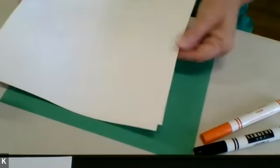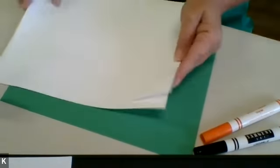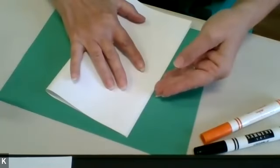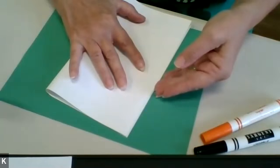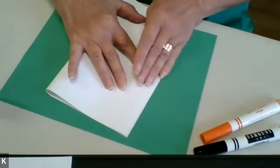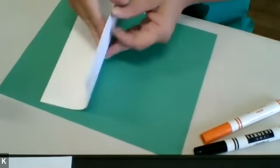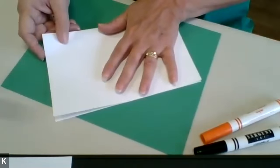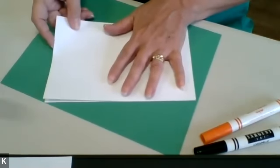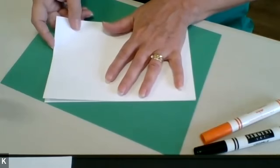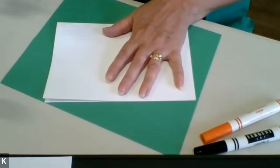So you're going to start off with one of the white pieces. You're going to fold it in half. Your hands will be smaller than mine, so that'll work out.